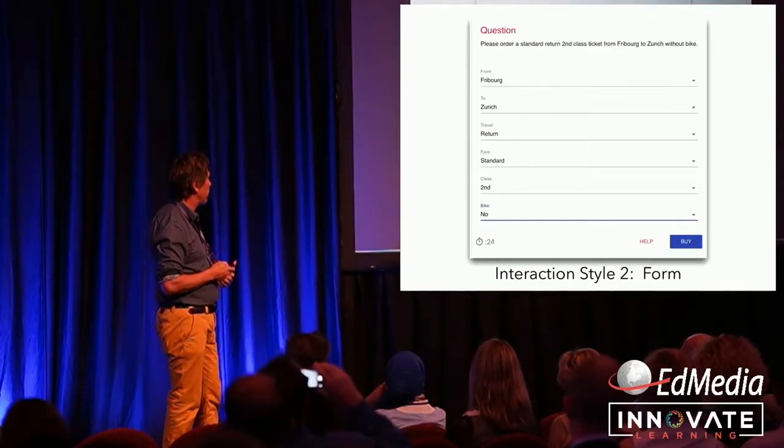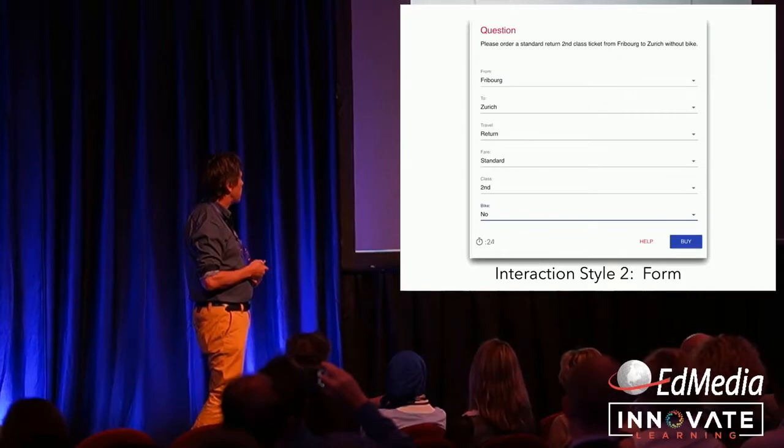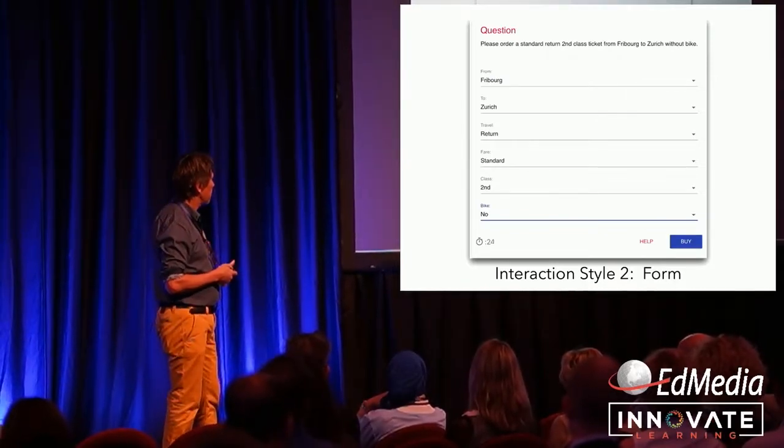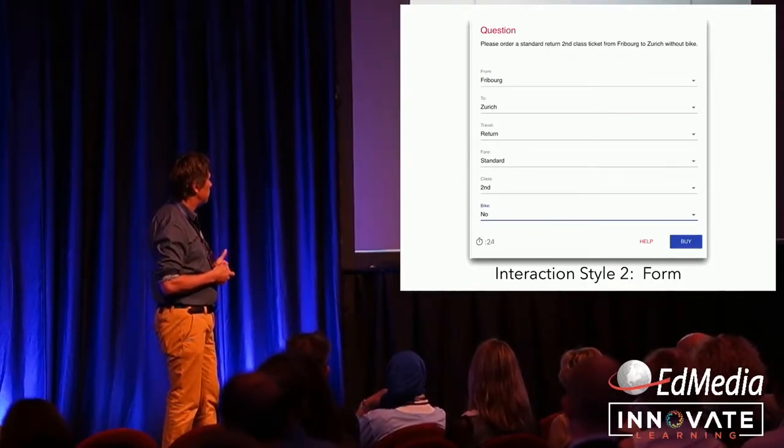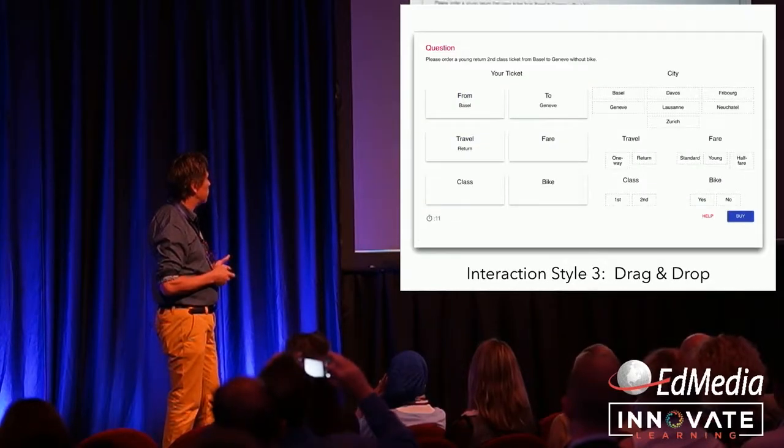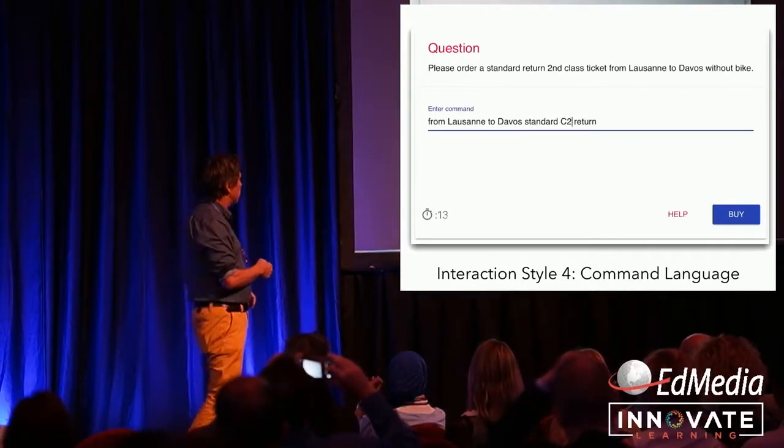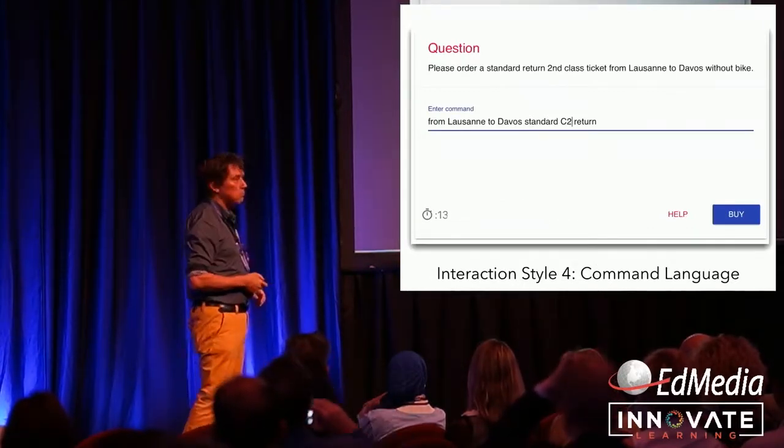Interface one. Interaction style two, they do the same thing, four more train tickets with a form style. Interface three with a drag and drop, same task. And then four more tickets with a language command. From Lausanne to Davos, standard C2 return.